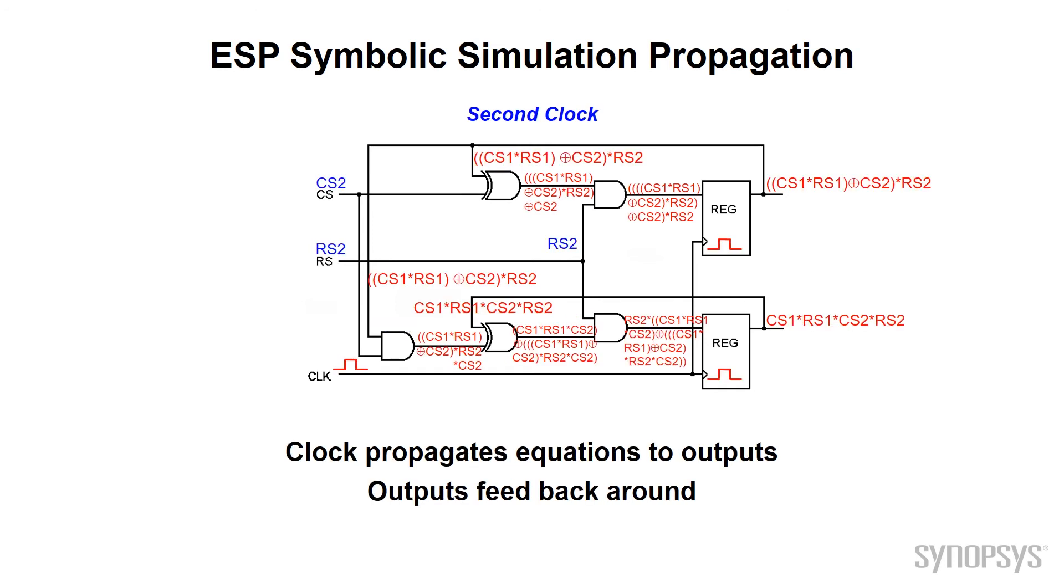Finally, let's complete the second test cycle by applying the clock changes. Now look at those equations. They are starting to get rather large. We could continue and apply additional test cycles with new input symbols. But would we really get any better verification?